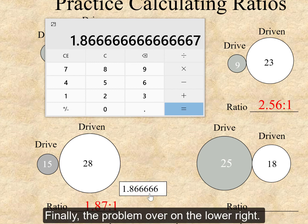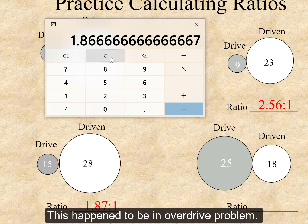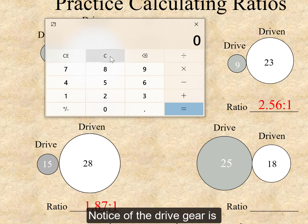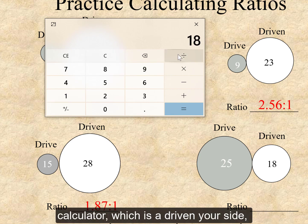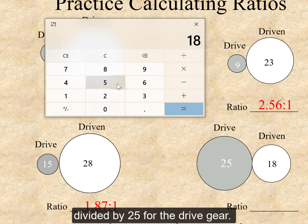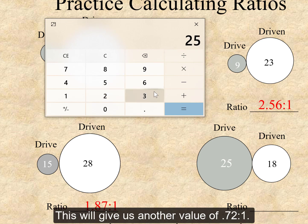And finally, the problem over on the lower right. This happens to be an overdrive problem. Notice that the drive gear is larger than the driven gear. We will input 18 into the calculator, which is the driven gear size, divided by 25 for the drive gear. This will give us another value of 0.72 to 1.